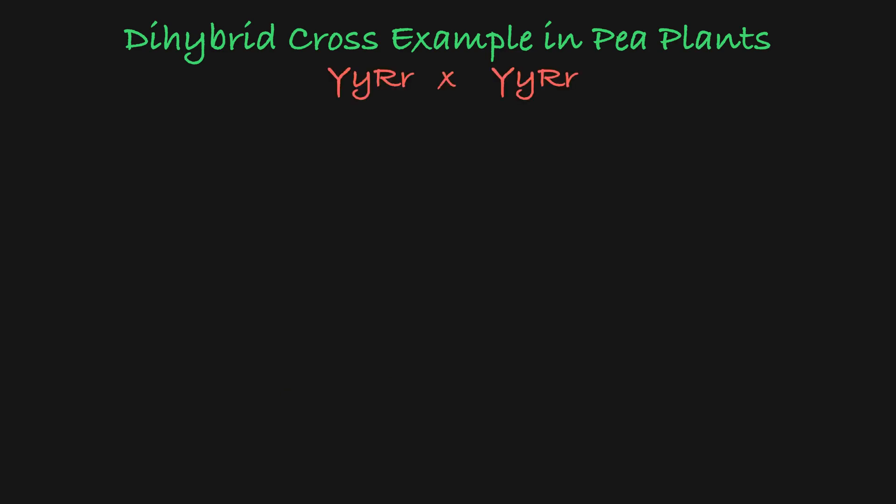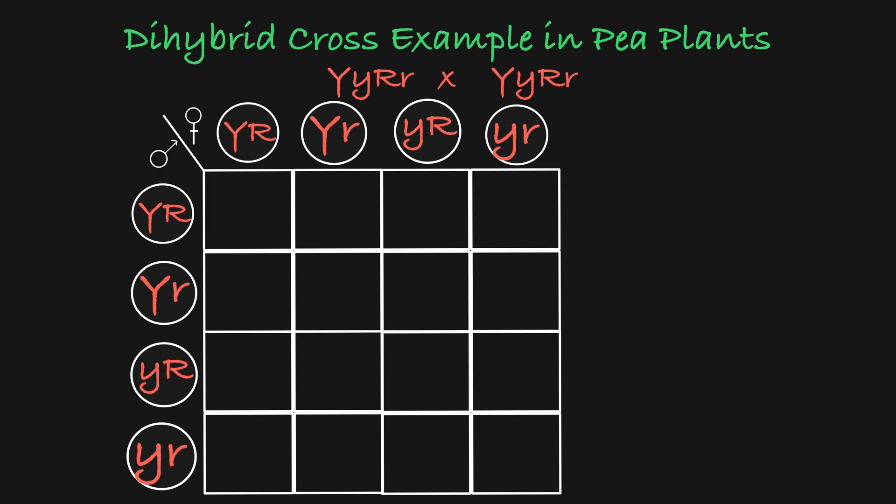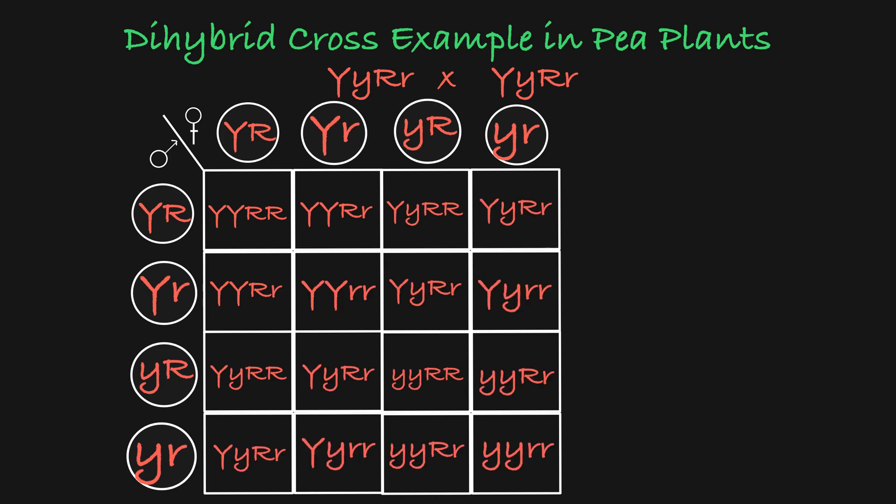Now that we know all of our possible gametes, we set up a Punnett square. Because each parent produces four different gametes, there are four columns and four rows, making 16 squares in this Punnett square. We fill it in just as we would a smaller Punnett square, and here is what we see.